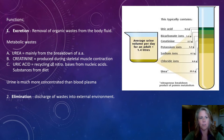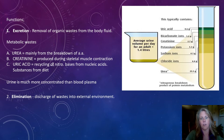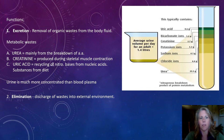First, excretion — the removal of organic waste from the body fluid, mainly the blood. These organic wastes are in the form of metabolic wastes. There are three major metabolic wastes that need to be eliminated through the kidneys: urea, creatinine, and uric acid.